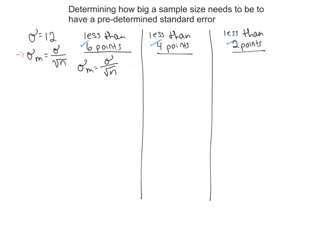What we're trying to find out is how big of a sample we need so that our standard error is as small as 6 points. We know our standard deviation is 12, and we want our standard error to equal 6. So we set up: 6 equals 12 divided by the square root of n, where n is our unknown sample size.